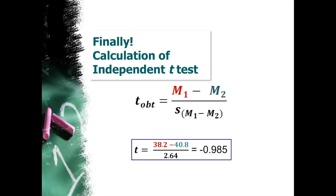So again, we have mean 1 minus mean 2 divided by the estimated standard error. So 38.2 minus 40.8. So we found those out a few slides before. Divided by 2.64. It gives us a t obtained of negative. So we're at least on the right side that we want to be. The left side we want to be. Negative .985.